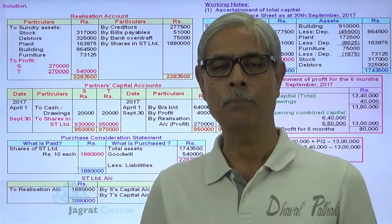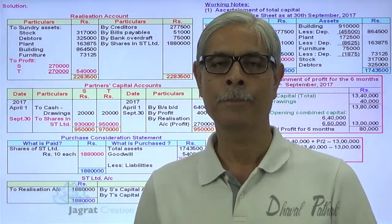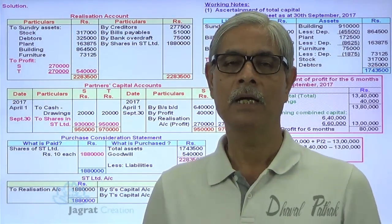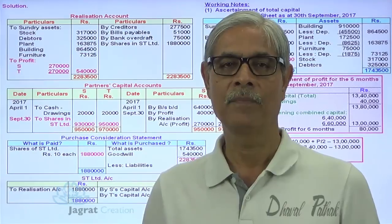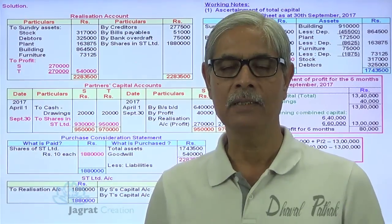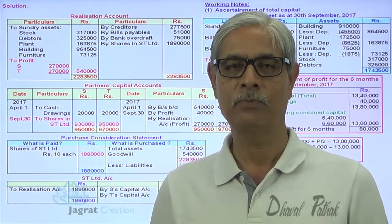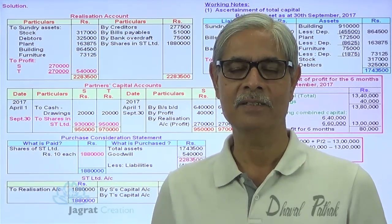The most important point of this sum is to find out the profit for the first six months till the date of sale, and to bifurcate that profit in light of the drawings information. I have tried to explain this sum and I hope you have followed all these things.